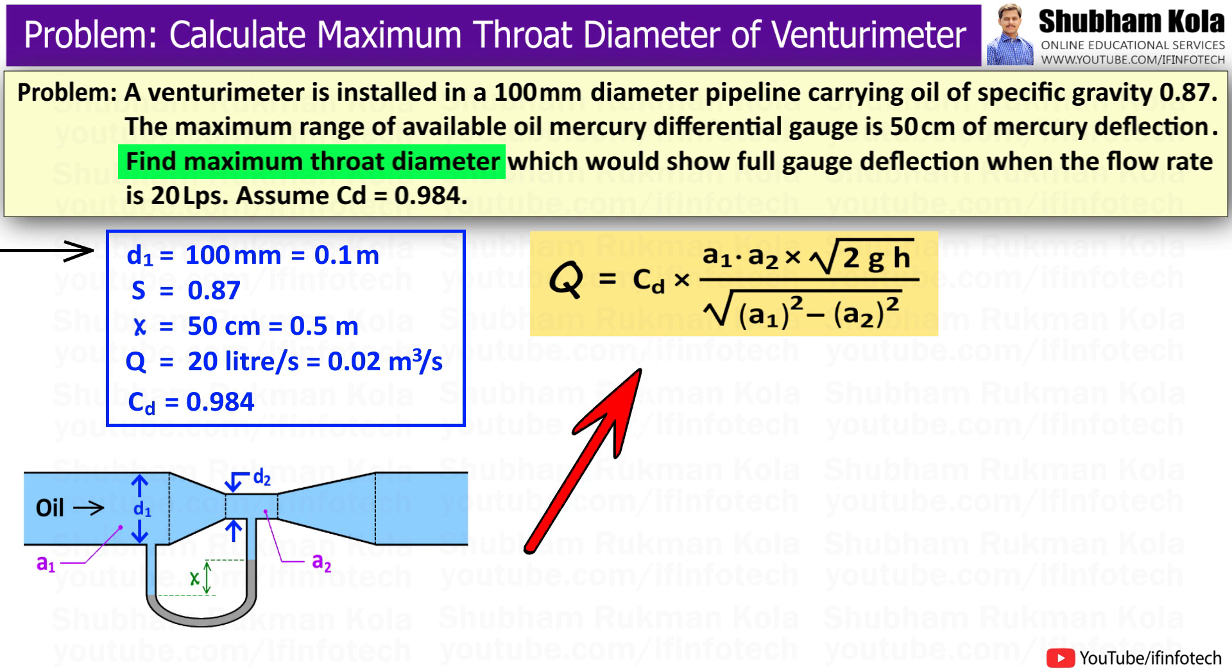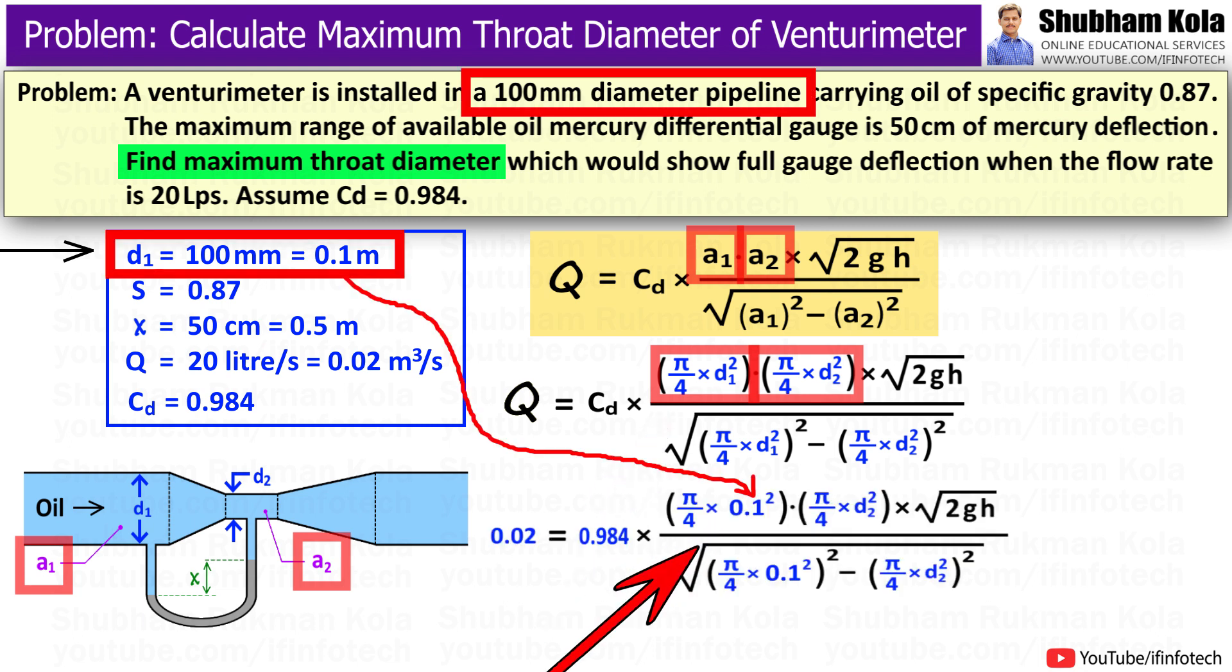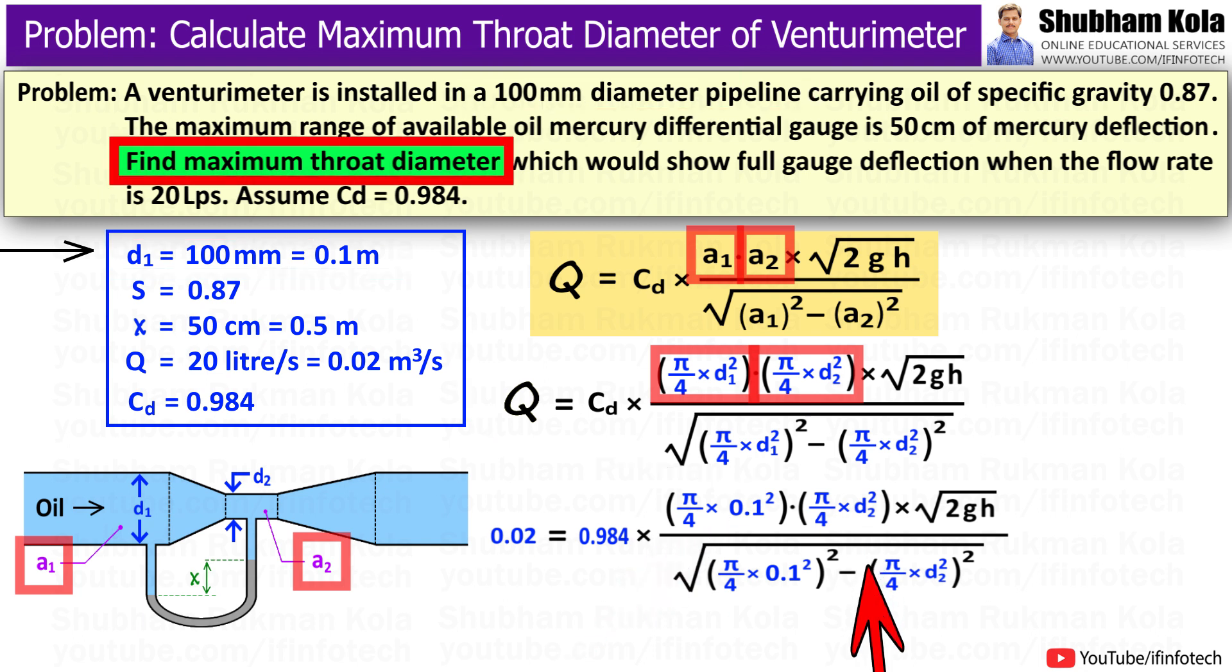In this formula, A1 and A2 are the areas of inlet and throat sections of the venturimeter. And we know that area equal to π/4 diameter square. Well, d1 is the diameter of pipe which is 0.1m and d2 is the diameter of throat which we have to calculate.